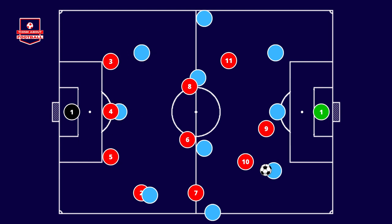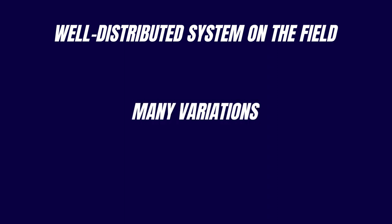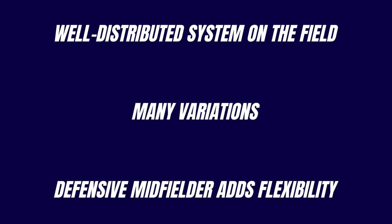This is just one example — pressing using the 4-3-3 can take different forms as well. To summarize, the 4-3-3 is a well-distributed system on the field, which is why it's widely used. The 4-3-3 also offers many variations in tactical systems according to different situations, and it can quickly revert to the initial shape. The presence of a defensive midfielder adds defensive flexibility.